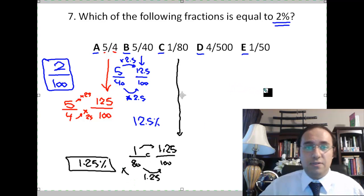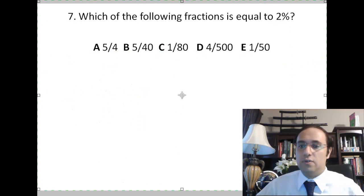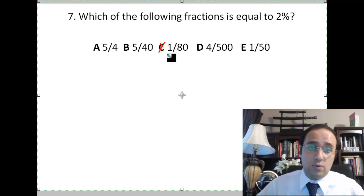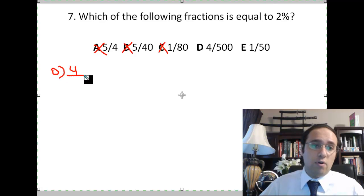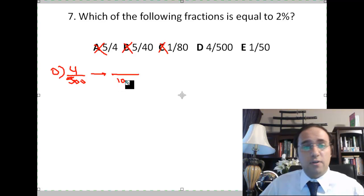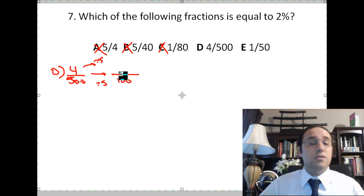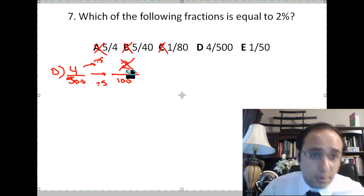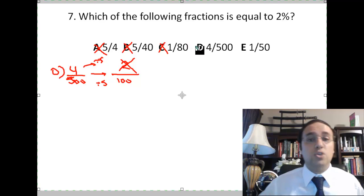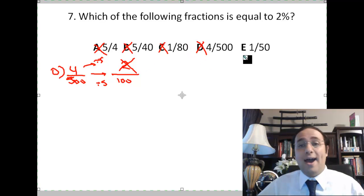I'm left with only 2. I'm left with D and E. We already tried A, B, and C. For D, 4 over 500. In order for 500 to become 100, I need to divide by 5. So I need to divide 4 as well here by 5. Do I need to calculate this? Of course not, because I know that 4 over 5 does not equal 2. And I want the answer to be 2 percent. So I don't need to waste time on the test.